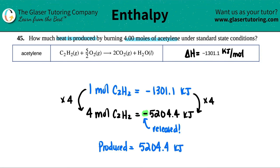5204.4 kilojoules. I don't care that there's a negative there. The negative just means that it's going to be released. But how much is going to be actually produced? 5204.4 kilojoules. And that's the answer. This one was an easy peasy one. What do you think guys? Hopefully this helped. Let me know in the comments.